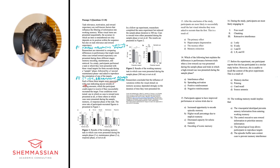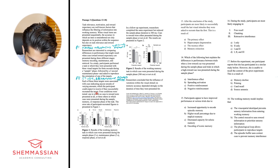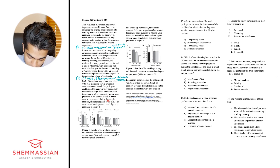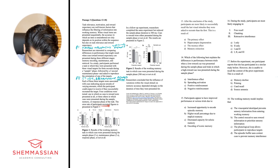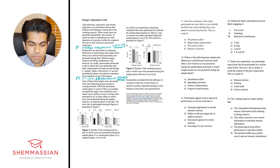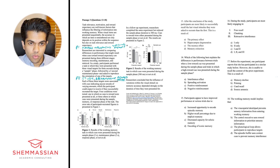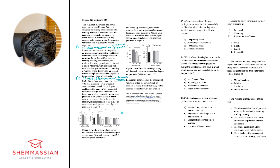Each of the three targets were associated with cues indicating payout rewards of varying amounts, which the participant could expect to receive if they successfully recreated the target. Four conditions were tested: one in which no cues to reward were presented at all, or three others in which cues were presented during the sample, memory, or response phase of the task. The error rate of participant-recreated figures is presented in Figure 1.